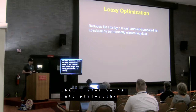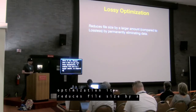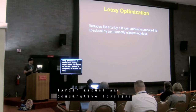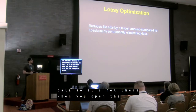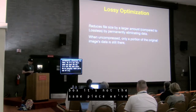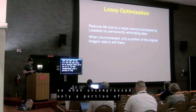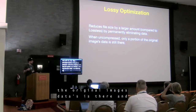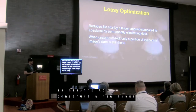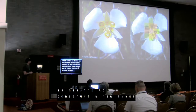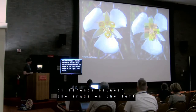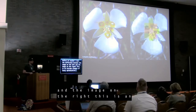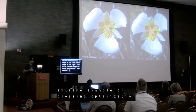Lossy optimization reduces file size by a larger amount compared to lossless because it permanently eliminates data. So it's not the same pizza when you open the box — we've actually taken parts out of it. When uncompressed, only a portion of the original image's data is there, and the browser is forced to reconcile what is missing to construct a new image. Here's an extreme example — before, we couldn't tell the difference between the two images. This extreme example of lossy optimization shows what happens when some human in the workflow has pushed it too far.